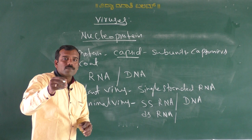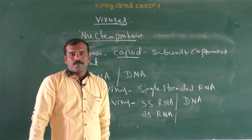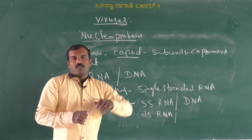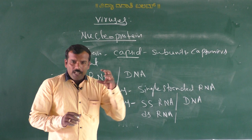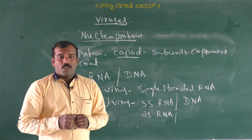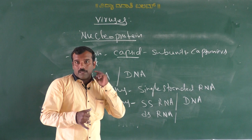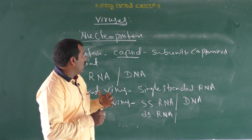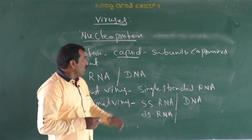In a virus, DNA or RNA is the genetic material that is infectious. The virus is made up of protein and genetic material — that is DNA or RNA. The genetic material acts as an infectious agent, while protein is not infectious. When the virus enters the host body, DNA or RNA — the genetic material — infects the host cell and controls the machinery of the host cell and kills it.